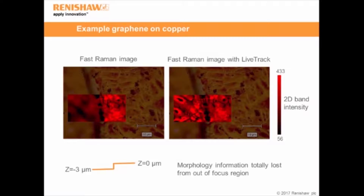The image on the right shows the same area — in fact the same scan — conducted with LiveTrack on. Here you can see that because we're able to track the surface, we get good intensity for both regions and we also recover all the morphology information that was lost. This really gives us much better control over what we measure and ensures that we get the best performance and the best results from our samples.